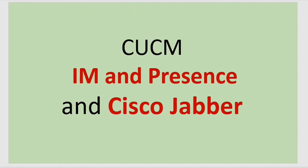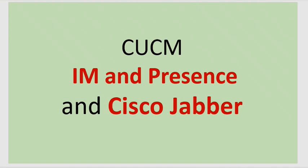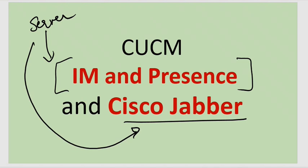Next is IM&P — Instant Messaging and Presence. IM&P is the service, and Jabber is the client. Jabber is the application that can run on different devices: Android, Apple, Mac, Windows, and also CarPlay, which is unique. IM&P is the service, so we need an IM&P server, and Jabber is the client.